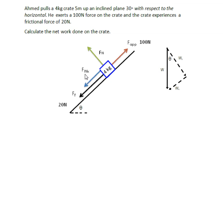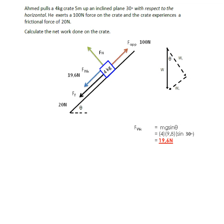We also have the gravitational force component F_wx — the force parallel to the slope — and the normal force which is perpendicular to the incline. The force of gravity parallel to the slope is 19.6 newtons, calculated as 4 kg × 9.8 × sin 30°, which gives us 19.6 newtons.